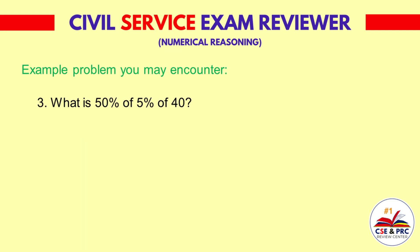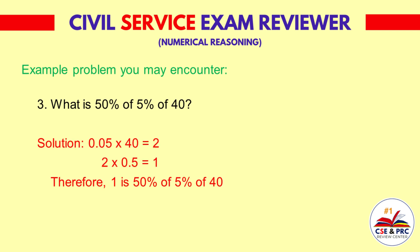Number 3: What is 50 percent of 5 percent of 40? This question might be confusing, but to answer this, first we must find 5 percent of 40. To do this, simply multiply 5 percent or 0.05 by 40. The answer is 2. Now let's get 50 percent of 2: 2 times 0.5.